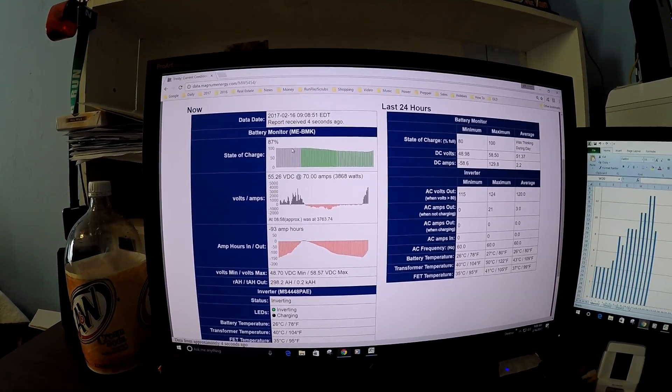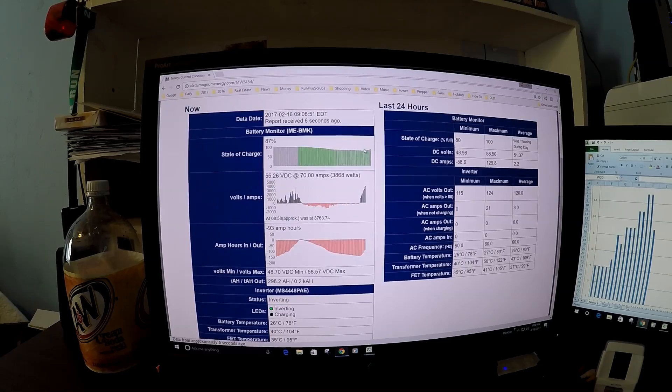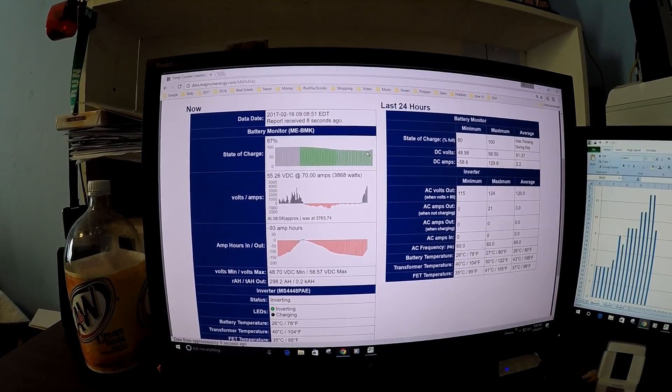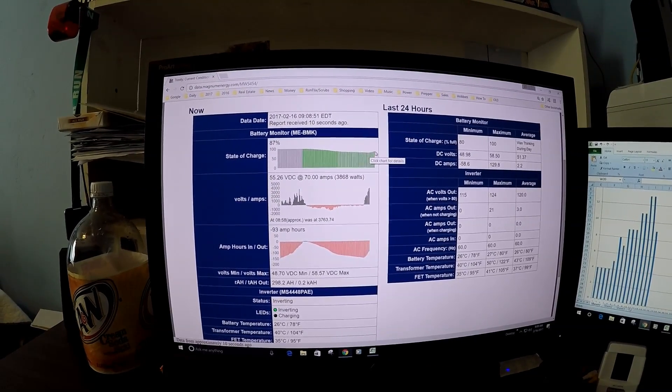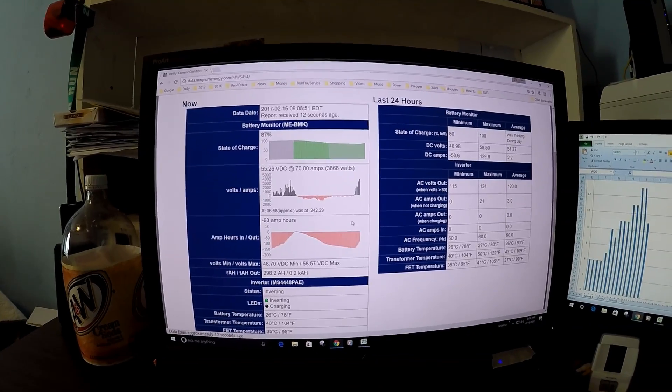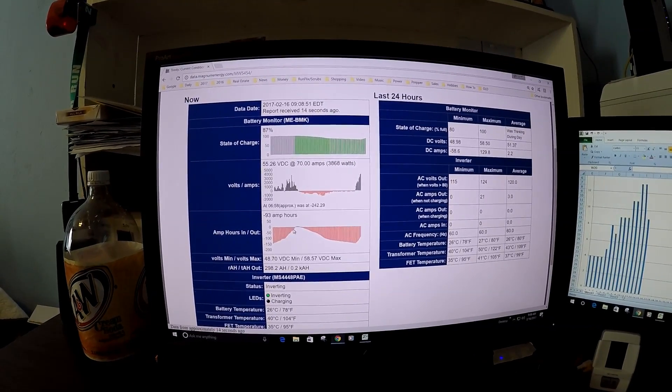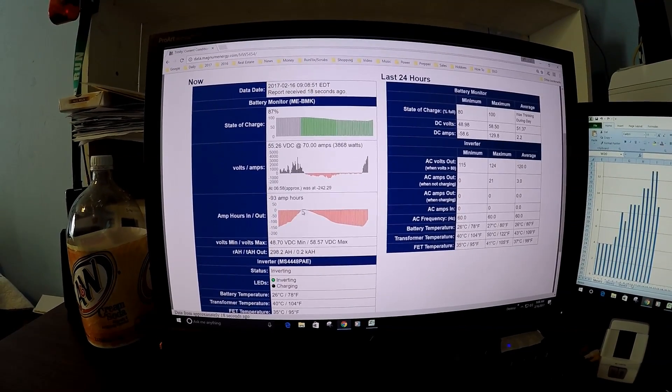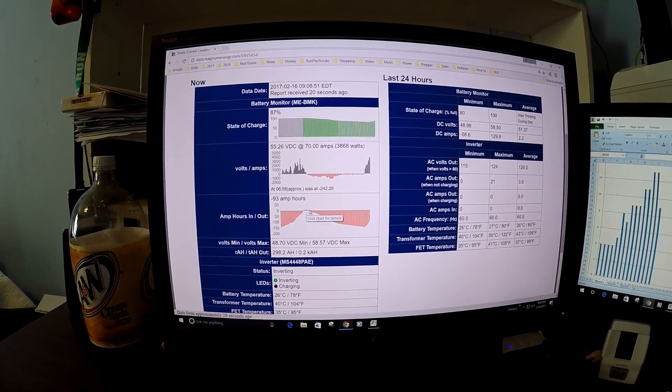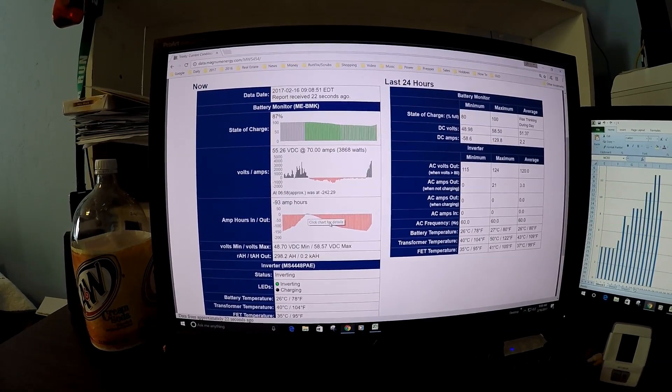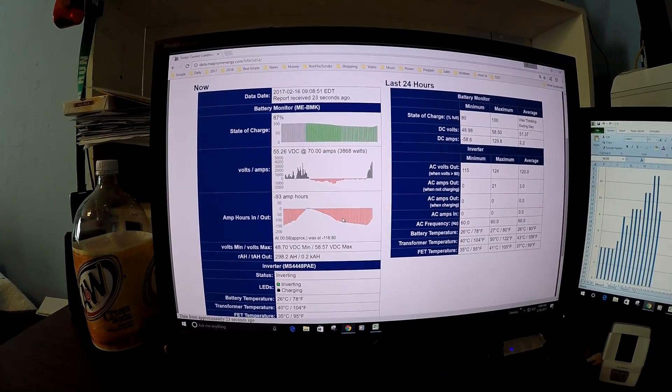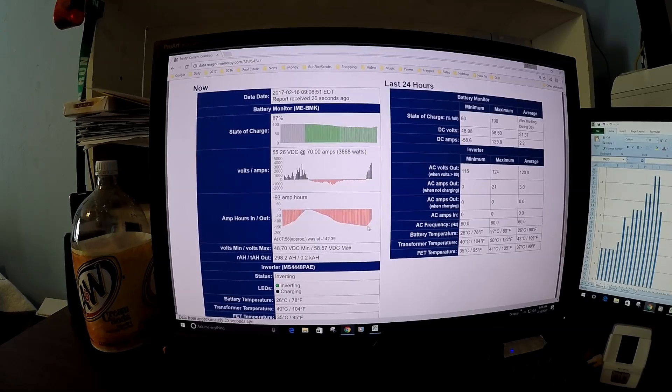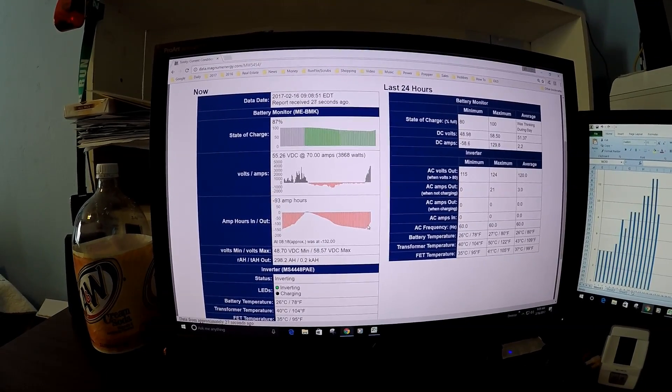Here you see the state of charge of the batteries up to 87%. 80 just an hour ago. And here you see the amps in and out of the battery. So it was fully charged yesterday afternoon, and then it went down overnight. And now it's quickly becoming charged back up.